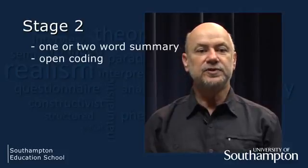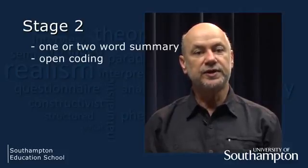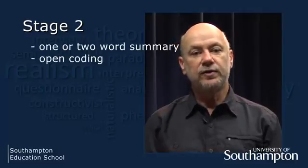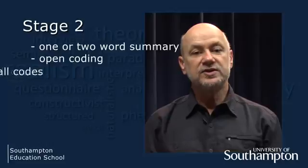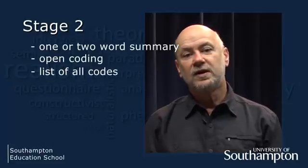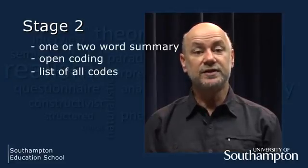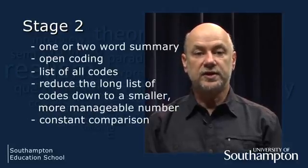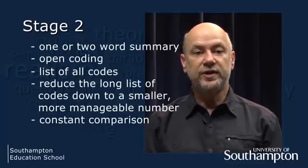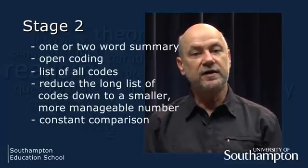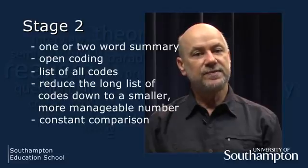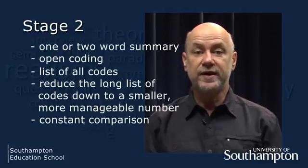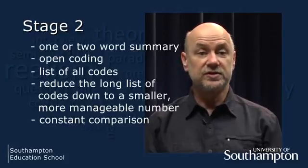It is sometimes helpful to use a word from the sentence you are coding to help create the open code. After open coding the entire interview, I make a list of all the codes. I look for similar codes and redundant codes. My objective is to reduce the long list of codes down to a smaller, more manageable number, maybe 20 to 25. This is an iterative process, so I often go back to my original data and check the new codes match. This is called constant comparison.